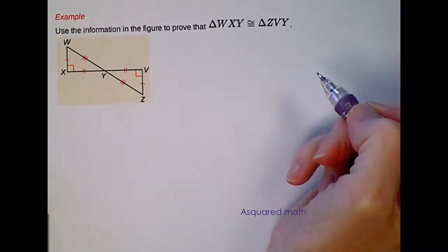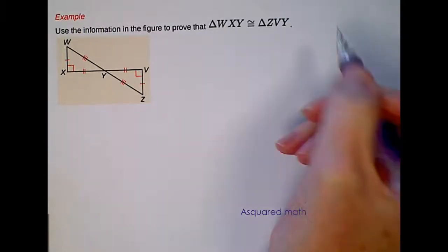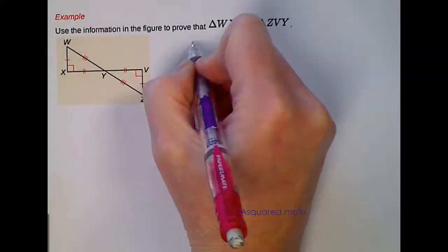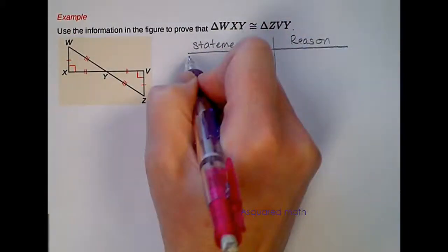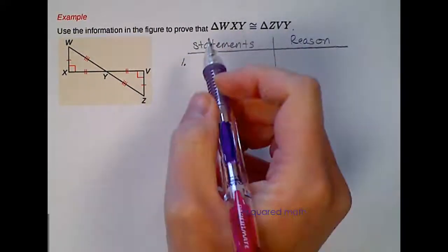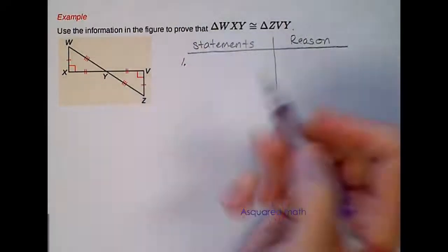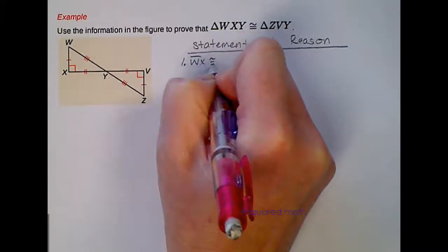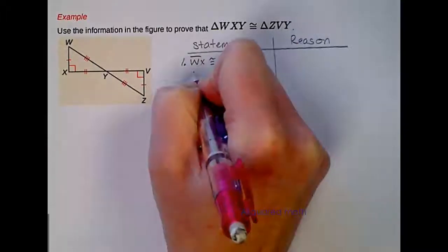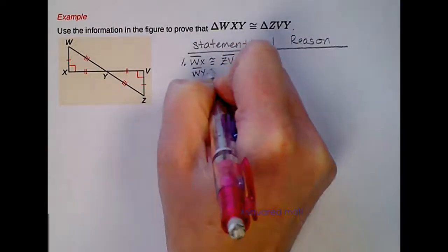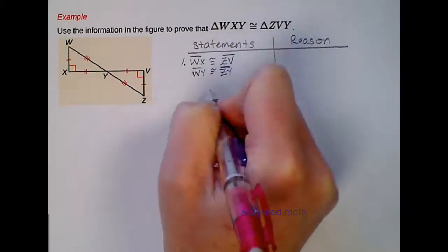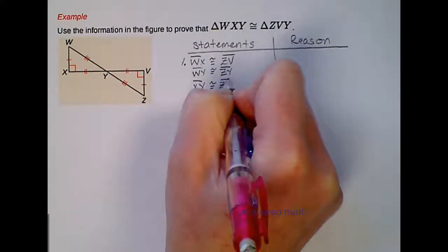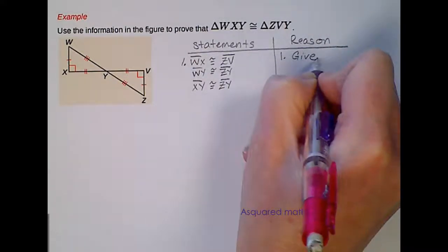In this example, we are asked to use the information in the figure to prove that triangle WXYZ is congruent to triangle ZVY. I'm going to do a two-column proof for this one. First thing I'm going to do is state my given information, and I'm going to list all three corresponding side lengths that are congruent to each other in this first statement. So I'll say that side length WX is congruent to side length ZV. I have WY is congruent to ZY, and XY is congruent to VY. And these are all given for our reason because they're marked in the picture.